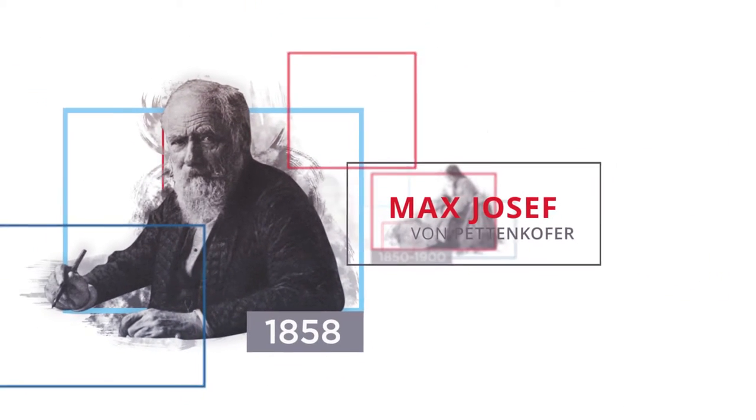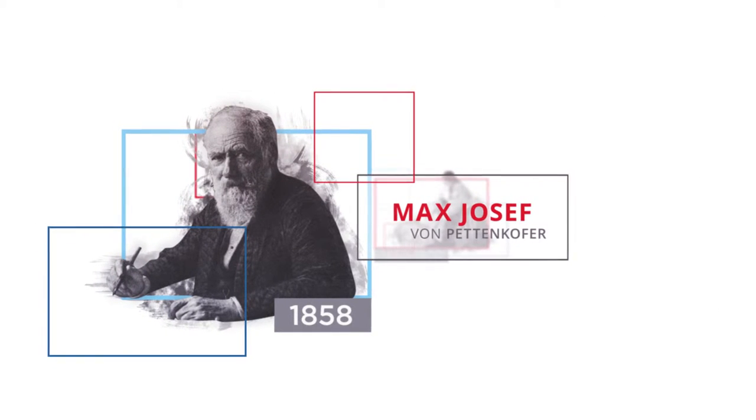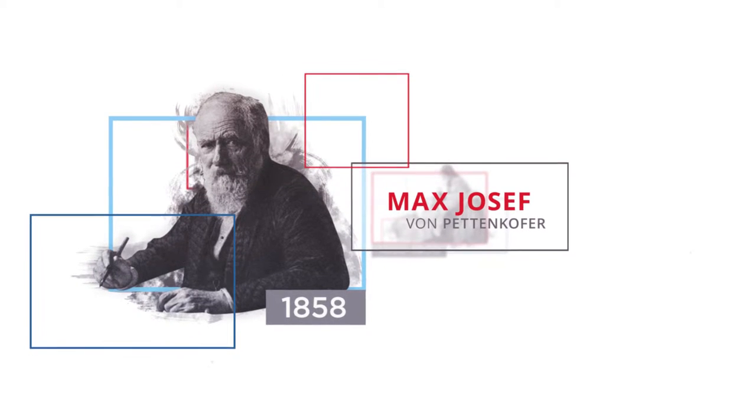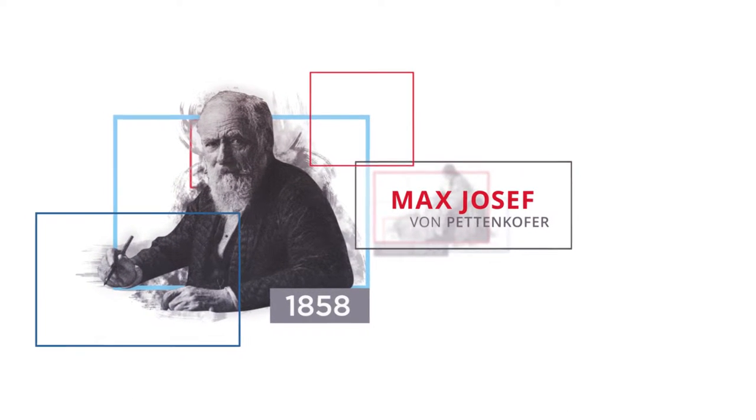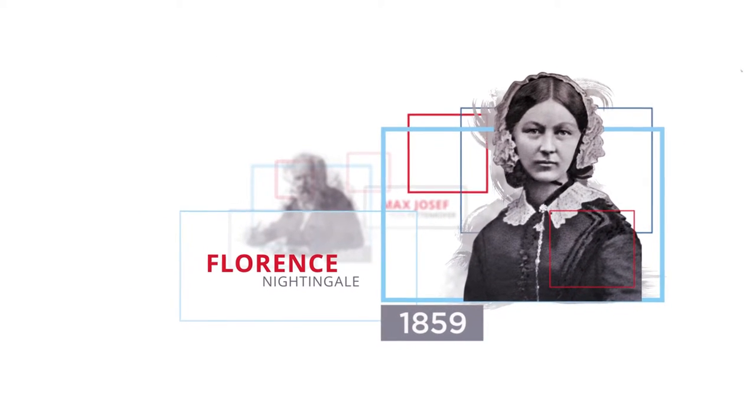In 1858, German chemist Max Joseph von Petzenkofer examines CO2 levels in indoor spaces, concluding that indoor air quality becomes poor and potentially harmful above certain levels.